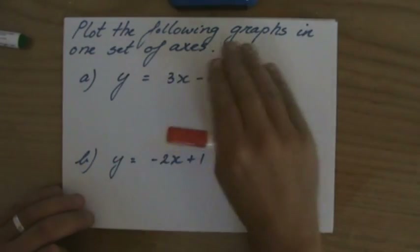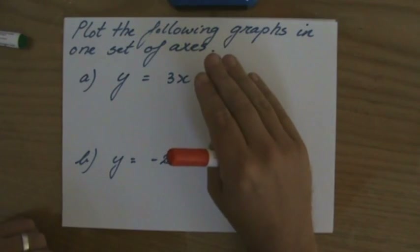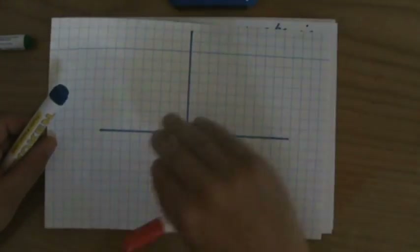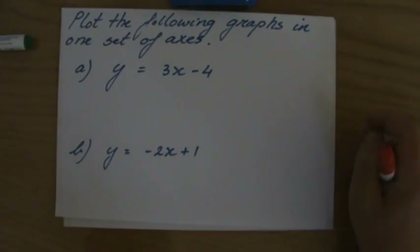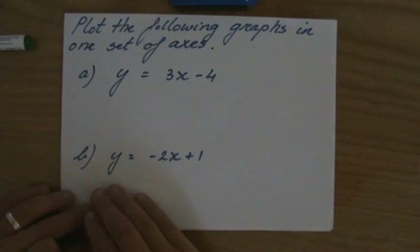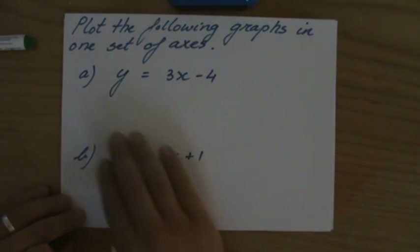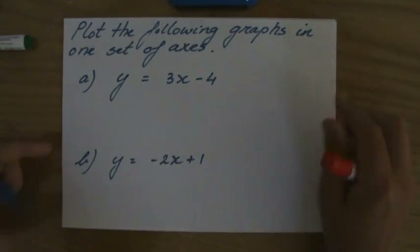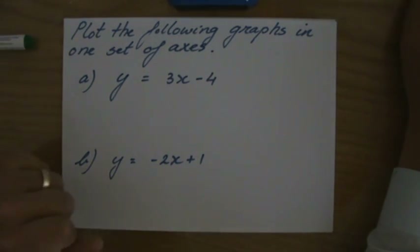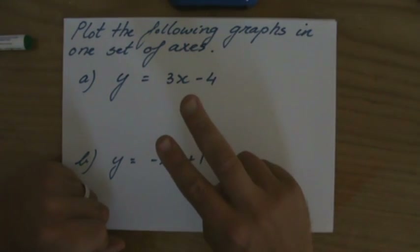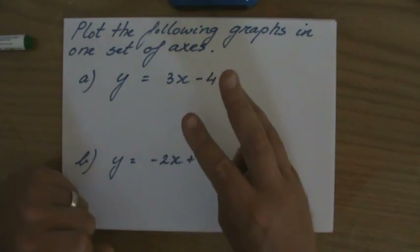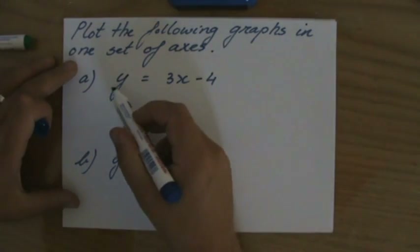I'm asked to plot the following graphs in one set of axes. I already drew my set of axes and I have to plot both graphs in this set. The first one is y equals 3x minus 4 and the second one is y equals minus 2x plus 1. These are linear equations and if I draw them I'm going to get a line. To draw that line I need a few points — actually two points, as I explained in my previous video — but we always find a third point to check our work and make sure we didn't make any silly mistakes.